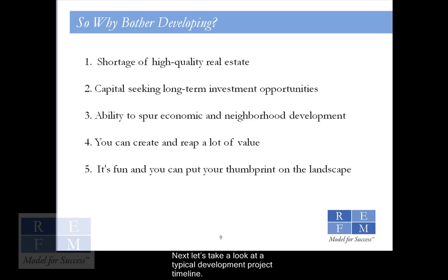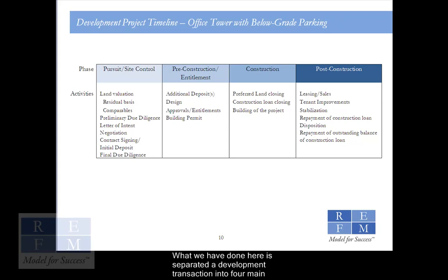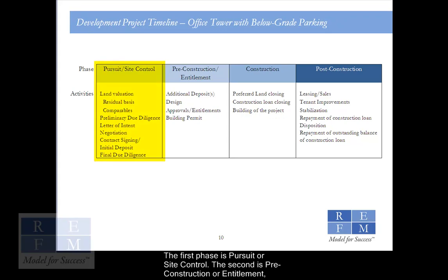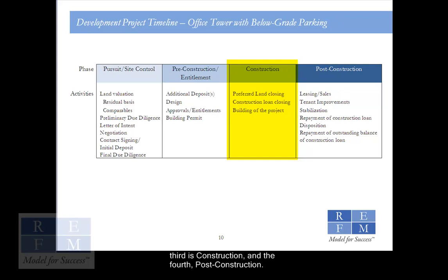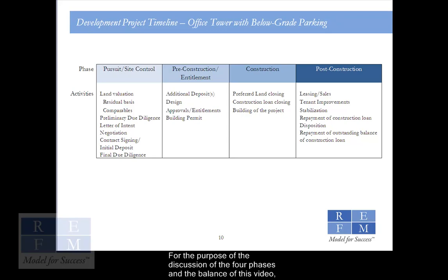Next, let's take a look at a typical development project timeline. What we have done here is separated a development transaction into four main phases, and we move forward in time as we move from left to right across the screen. The first phase is pursuit or site control, the second is pre-construction or entitlement, third is construction, and the fourth is post-construction. For the purpose of this discussion, we will be using a commercial office building as our example.